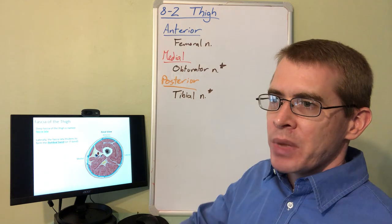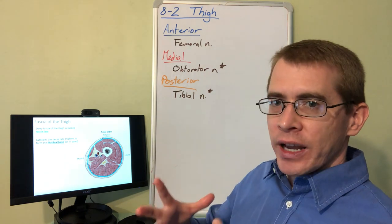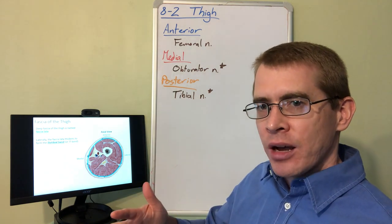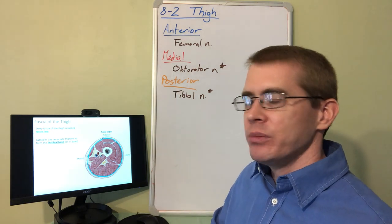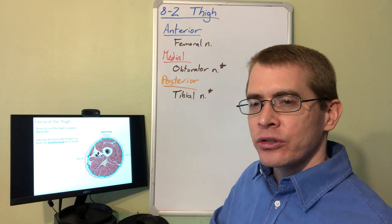A surgeon will excise portions of maybe the small saphenous vein and transplant that portion to the surface of the heart to bypass the occluded region of the artery. In your patients, especially geriatric patients, you may find vascular anomalies in the legs that could be the result of surgeries.